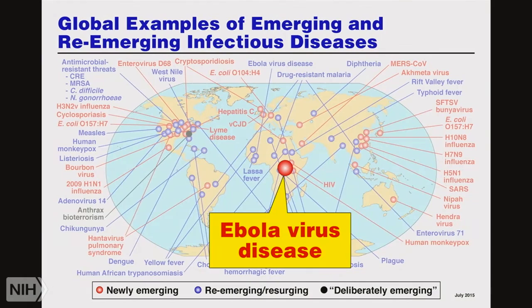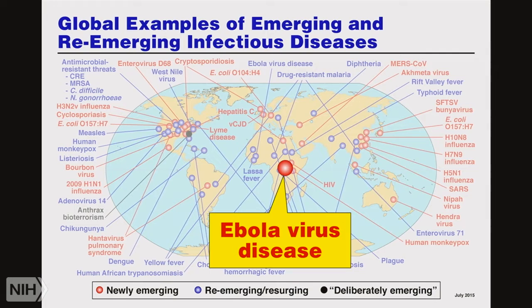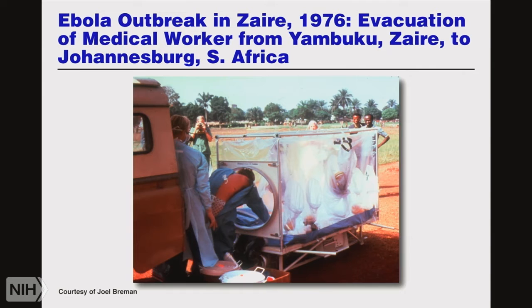In 1976, Ebola was a newly emerging disease. The Ebola we've experienced recently is a re-emerging disease. The first recognition was in Zaire and South Africa, where a new disease was discovered. Since then, there have been about 24 outbreaks, usually anywhere from two or three patients up to a couple of hundred patients.